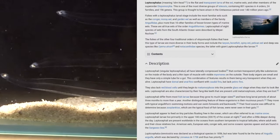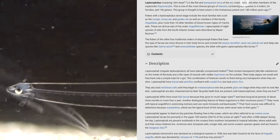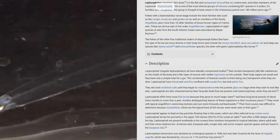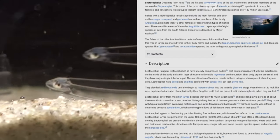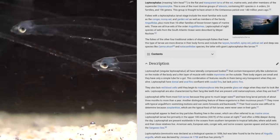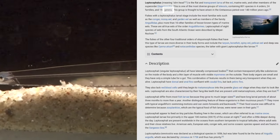Leptocephalus, meaning slim head, is the flat and transparent larva of the eel, marine eels, and other members of the superorder Elopomorpha. This is one of the most diverse groups of teleosts, containing 801 species in four orders, 24 families, and 156 genera.